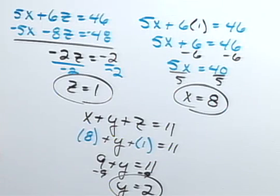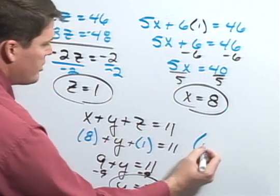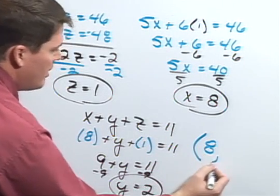Now I've found all three of my variables, so I can write my solution as 8, 2, 1.